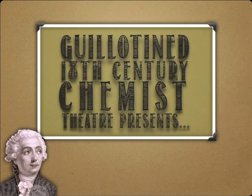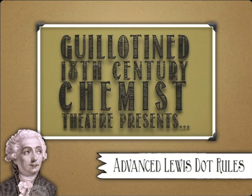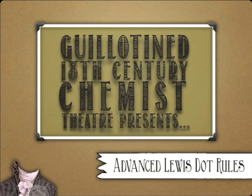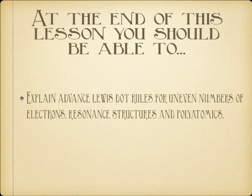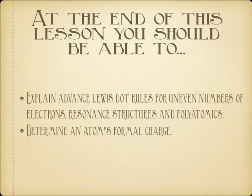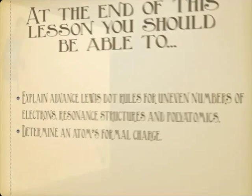Hello and welcome back to guillotine to 18th Century Counts Theatre. Today we are going to go into a little bit more detail in Lewis Dots, talk about some of the advanced rules, and cover a few things we glossed over in the first lesson. We're going to look at dealing with an uneven number of electrons, and to do that we'll have to talk about formal charge. And then we're going to talk about resonance structures and polyatomics.